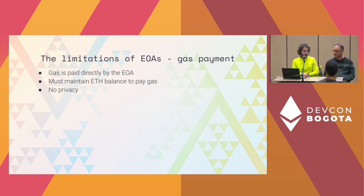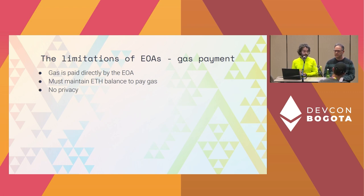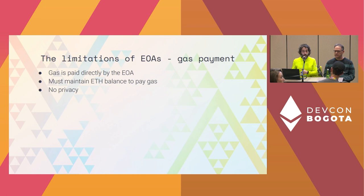Another limitation is that if you have to maintain an ETH balance in every account, it's hard to split activity across many accounts, because you have to top off ETH. All the ETH you top off has to come from somewhere that's probably attached to your identity. You may be KYC'd at exchanges, so your identity is known to some players, and it's not too hard to track — even if you split activity, it's all coming from one source. That's a privacy problem.